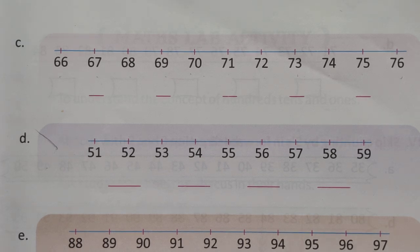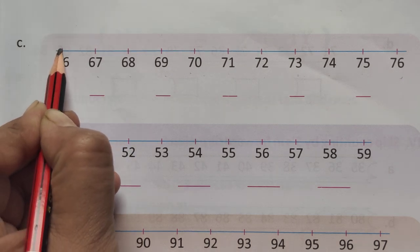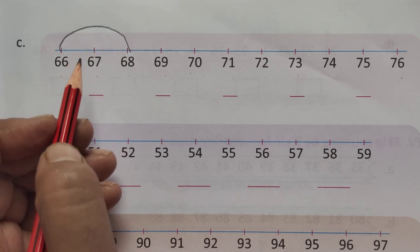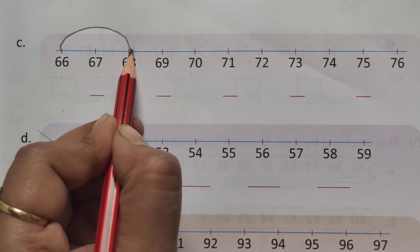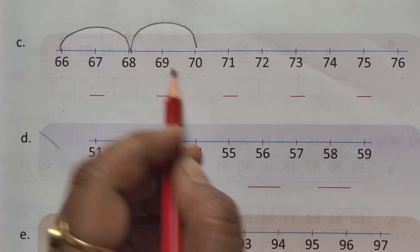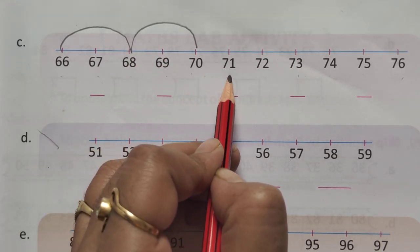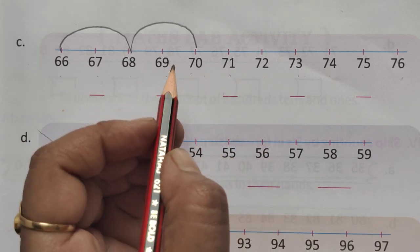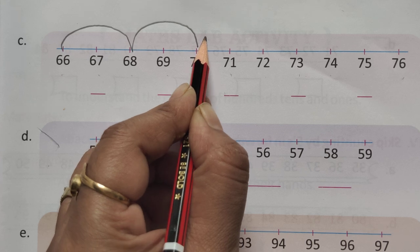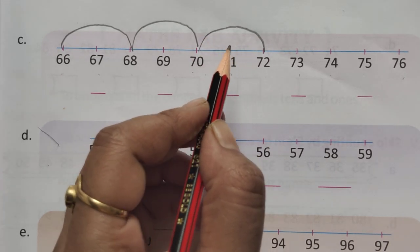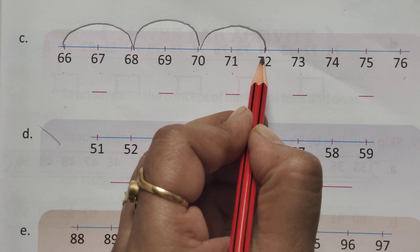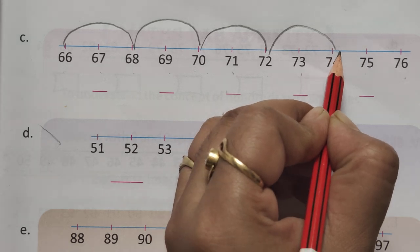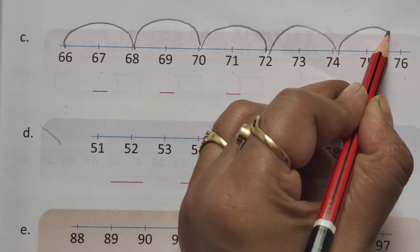So, first of all, jumping again, 67, 68. Again jumping, 69, and 70, 71, 72, 73, jumping again, 74. Again jump.